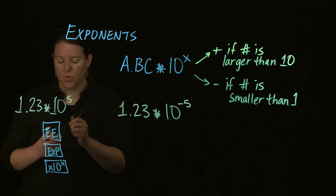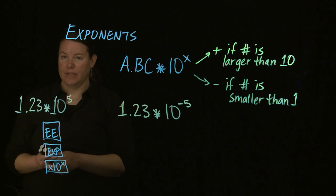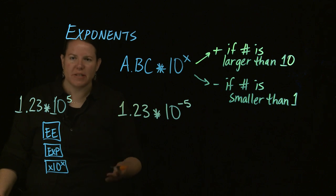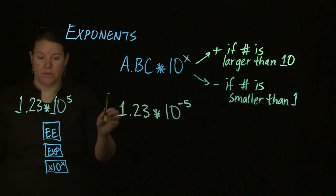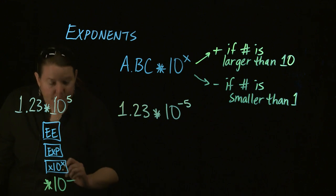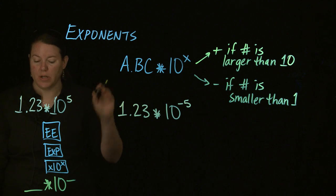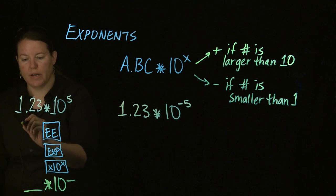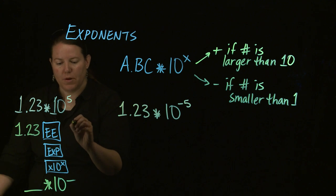This button actually signifies times ten to the whatever. It's only confusing because there is also a ten to the X button, which is inverse log base ten. But what this button means is times ten to the whatever. So you plug in the beginning number, hit that button, and then plug in the exponent. You'd put 1.23, hit that button, then put five.